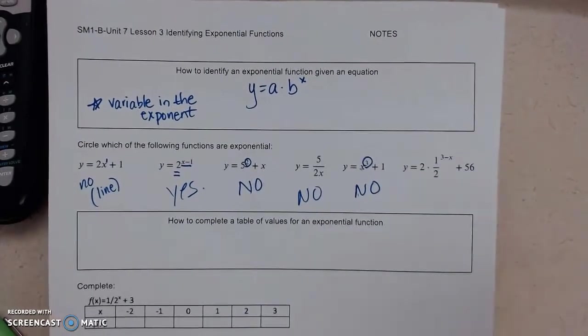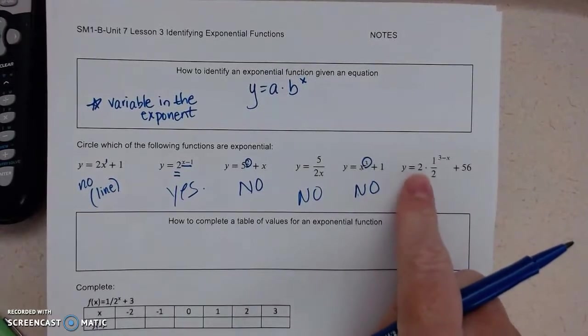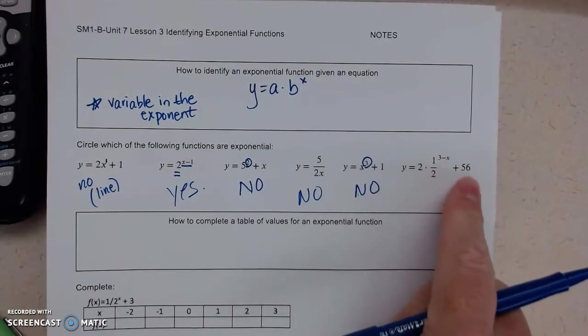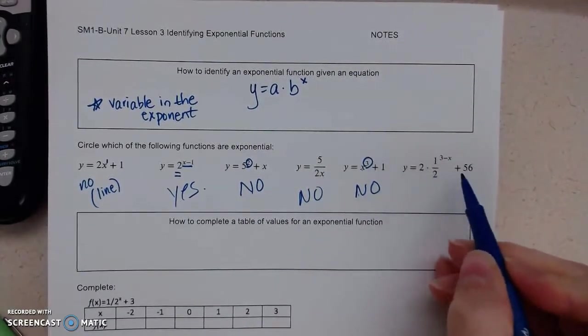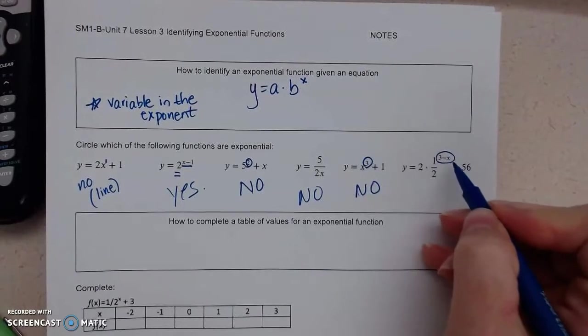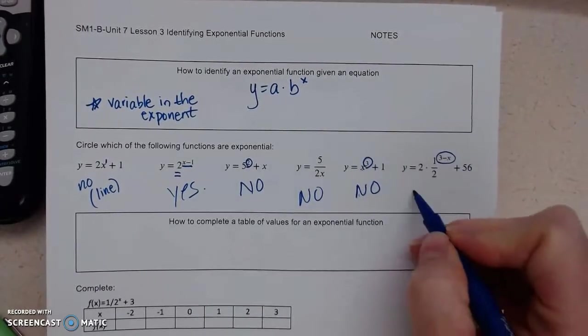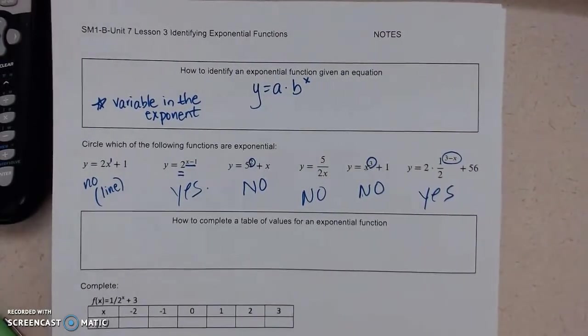And my last example looks really complicated: 2 times 1 half to the 3 minus x plus 56. Well, the numbers are relevant. I've got an exponent, and I have a variable in the exponent. That meets the criteria.